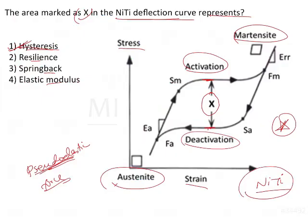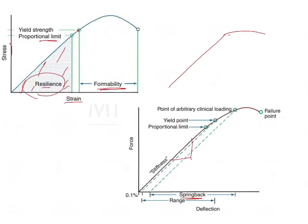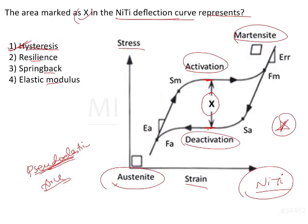Elastic modulus is basically the slope of the stress-strain graph, which is a constant value for a particular material. Stainless steel will have its own Young's modulus, and Ni-Ti will have another Young's modulus. This is a property that cannot be altered and is derived from the slope of the stress-strain graph. So here, what is shown as X is not the slope — it is the difference in the force levels between activation and deactivation. This is hysteresis.